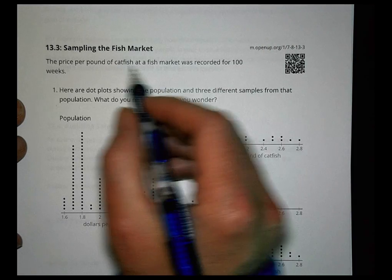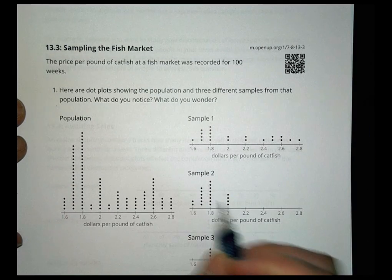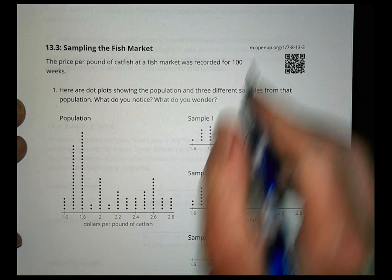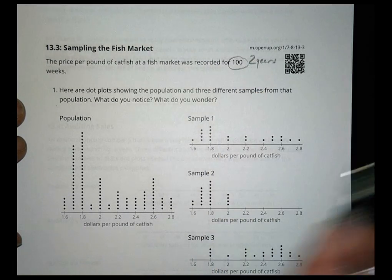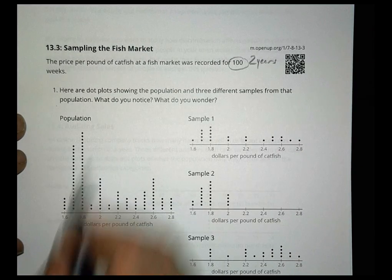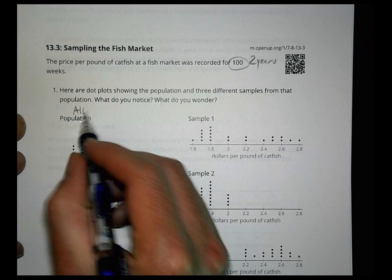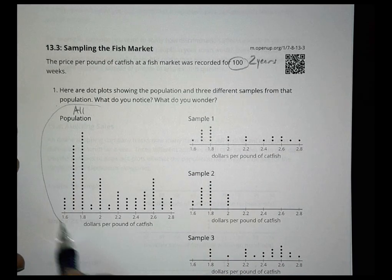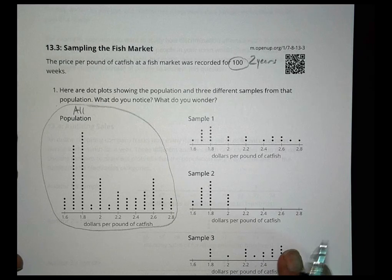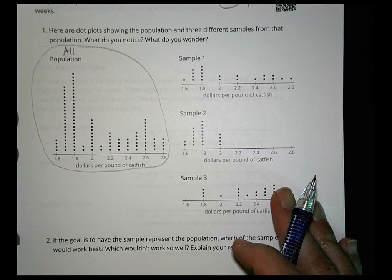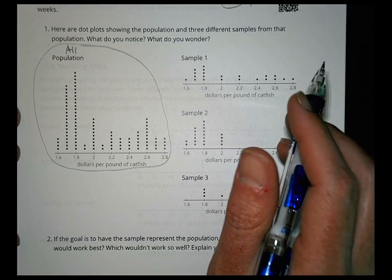The price per pound of catfish at a fish market was recorded for 100 weeks — that's almost two years! The population here is all 100 prices. We're looking at dot plots comparing the population to three different samples drawn from that population.